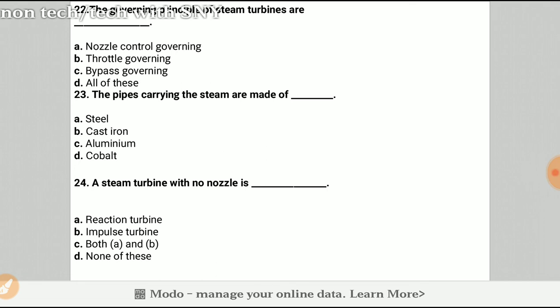Question 22: The governing principle of steam turbines are? The answer will be D: nozzle control governing, throttle governing, and bypass governing. All the three above options are correct. Question 23: The pipe carrying the steam are made by? The correct option is steel.